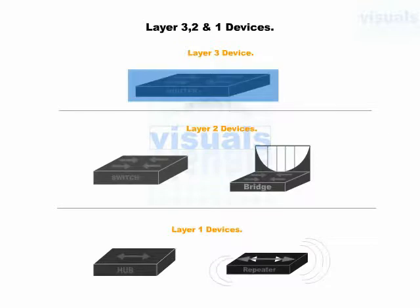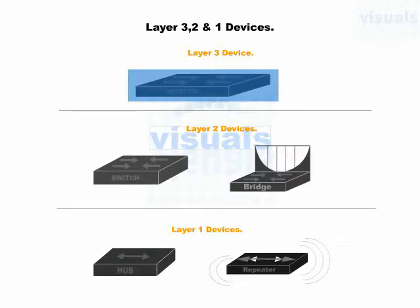Starting from Layer 3 devices — it is the router. Routers forward packets within and across the network, determining the paths. A router filters the packets based on logical addresses, which are IP addresses. Layer 3 of the OSI model deals with packets, which is why a router is a Layer 3 device. We are going to operate routers and discuss features like DNS, DHCP, routing, OSPF, EIGRP, wide area network security, and more in upcoming visuals.